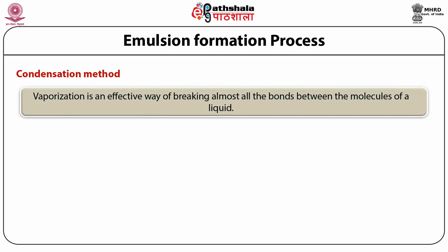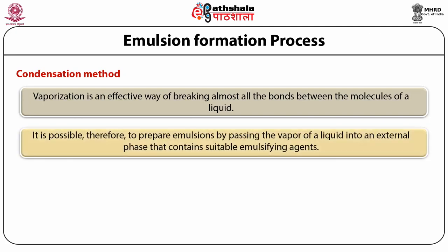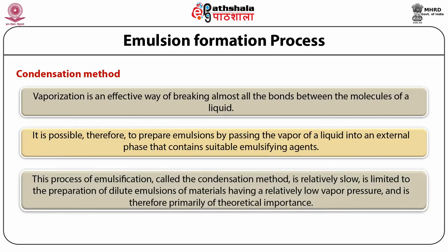The condensation method involves vaporization, which is an effective way of breaking almost all the bonds between the molecules of a liquid. It is possible to prepare emulsions by passing the vapor of a liquid into an external phase that contains suitable emulsifying agents. This process, called the condensation method, is relatively slow, is limited to the preparation of dilute emulsions of materials having a relatively low vapor pressure, and is therefore primarily of theoretical importance.